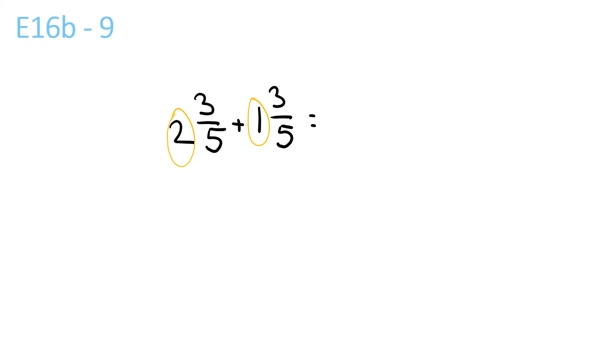Next, 2 plus 1 is 3, and 3 plus 3 is 6 over 5, because the bottom one stays the same. You can simplify that even more. So you get 6 over 5, which is the same as 1 and 1 over 5. So you get that, you get that, and you add them. So the answer is 4 and 1 over 5.